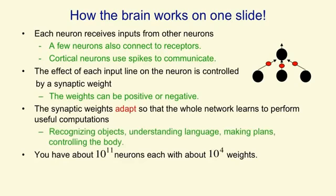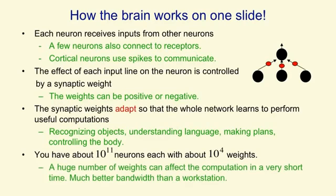For example, recognizing objects, understanding language, making plans, controlling the movements of your body. You have about 10 to the 11 neurons, each of which has about 10 to the 4 weights, so you probably have 10 to the 15 — or maybe only 10 to the 14 — synaptic weights. A huge number of these weights, quite a large fraction of them, can affect the ongoing computation in a very small fraction of a second, in a few milliseconds. That's much better bandwidth to stored knowledge than even a modern workstation has.